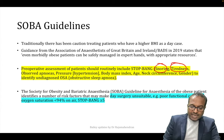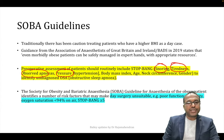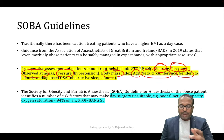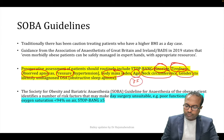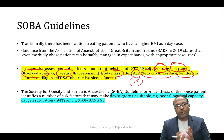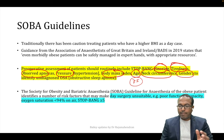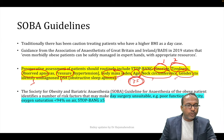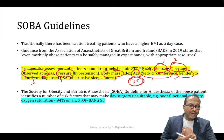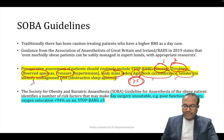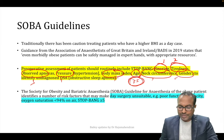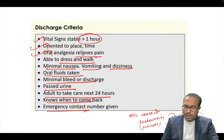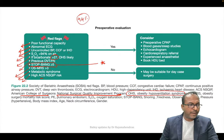STOP-BANG: S = Snoring, T = Tiredness, O = Observed apnea, P = Pressure (hypertension), B = BMI, A = Age, N = Neck circumference, G = Gender. Each factor scores 1. If STOP-BANG is ≥5, do not do daycare surgery. If less than 5, you can proceed. The sepsis 6 bundle should be completed within 6 hours.